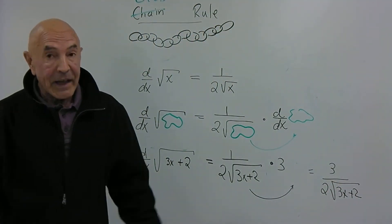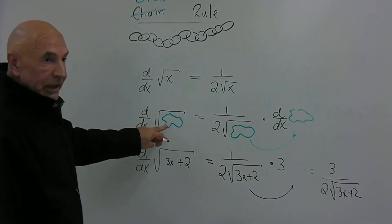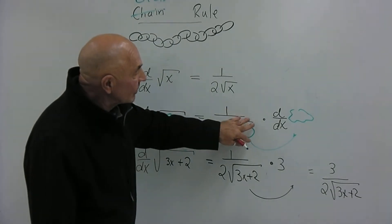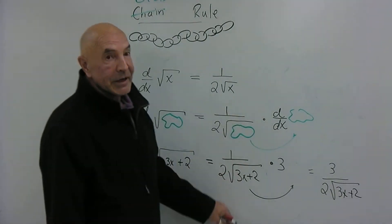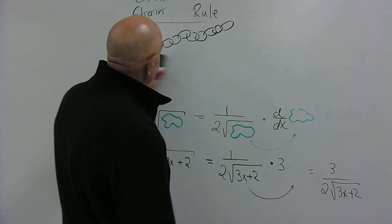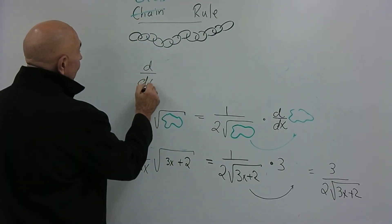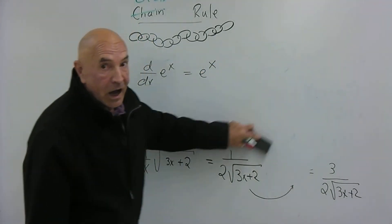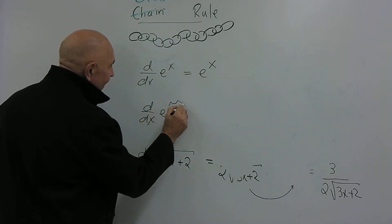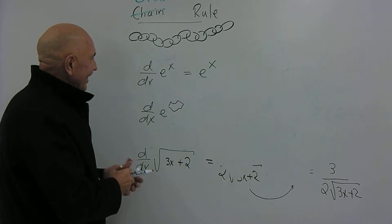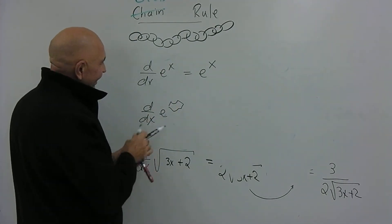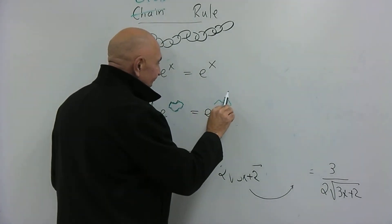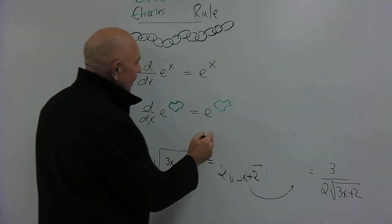That's all there is to the chain rule: if instead of x you have a blob, replace x by the blob throughout in the answer, then multiply by the derivative of the blob. Let's apply it to e^x. We know the derivative of e^x is e^x, so the derivative of e to a glob is e to the glob times the derivative of the glob.